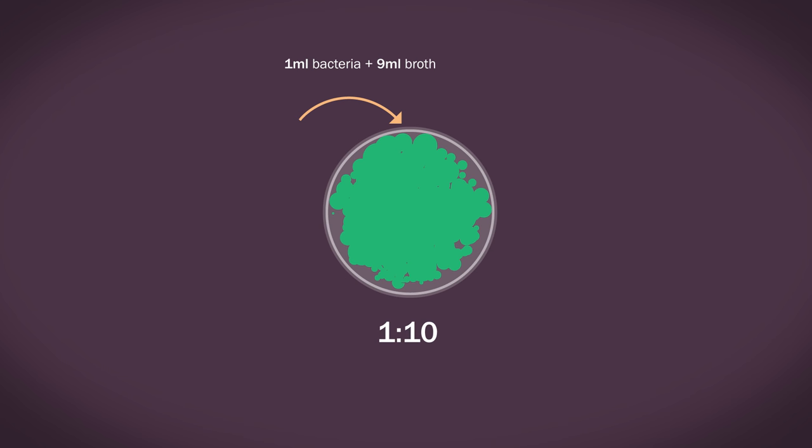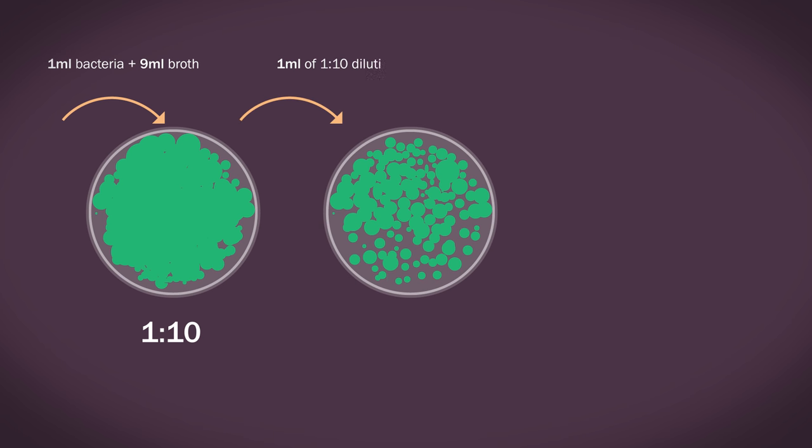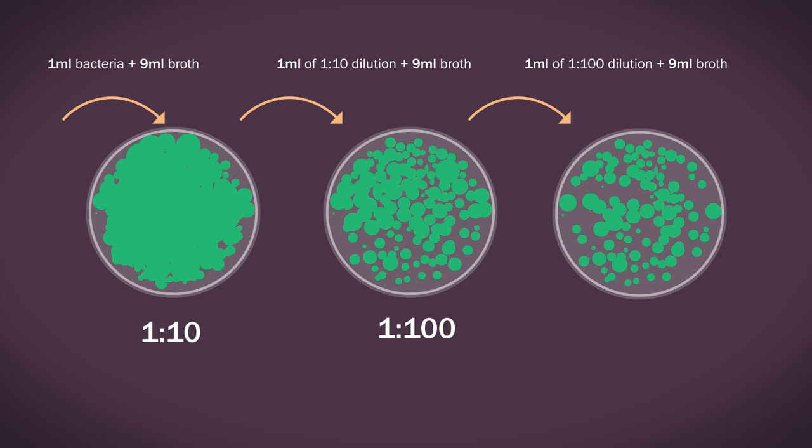If we then take one mL of this 1 to 10 dilution and add it to 9 mL of broth, we now have a 1 to 100 dilution. And if we take one mL of this 1 to 100 dilution and add it to 9 mL of broth, we now have a 1 to 1000 dilution.